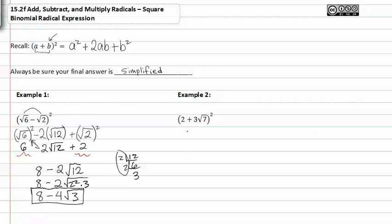So we're going to square the first term. Take the product of the two terms and multiply them by two. And then square the second term in the binomial, which will be plus nine times seven.